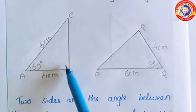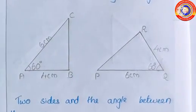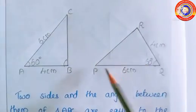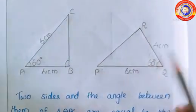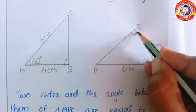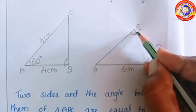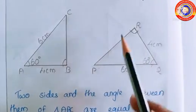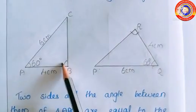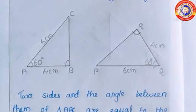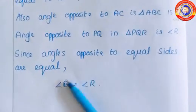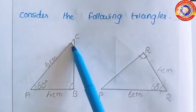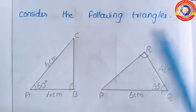The angle opposite to AC in triangle ABC is angle B, and the angle opposite to PR in triangle PQR is angle Q. Since angles opposite to equal sides are equal, we can write angle B is equal to angle Q.